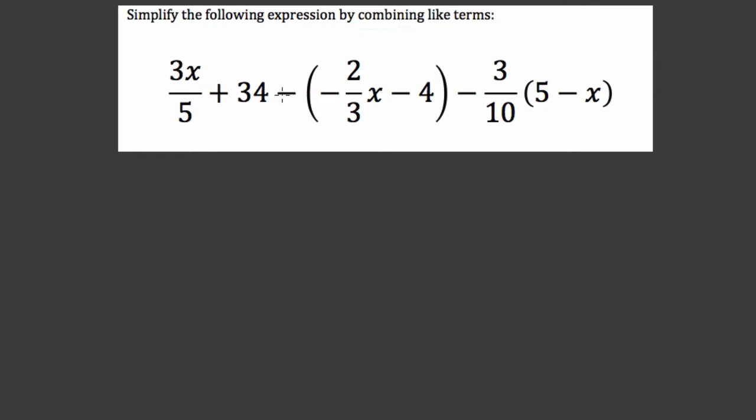I notice there's a subtraction sign right here, and I notice that these parentheses are being subtracted. So what I'm going to do first is subtract all of the terms inside the parentheses. So I'm going to subtract negative 2 thirds, and then I'm going to subtract negative 4. So I'm going to subtract these two terms here, and this is just something I do to rewrite the expression and not lose track of all these negative signs.